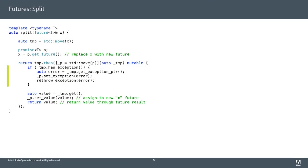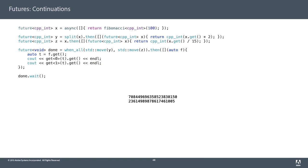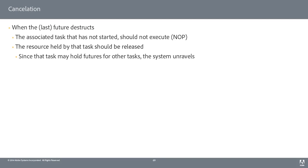We also need to handle exceptions: .get() could throw, and we want to split the exception and send it down both paths. So we check if temp has an exception, get the exception pointer, set the exception on the promise P, and then re-throw the exception — which hands it off to the future returned from our split.